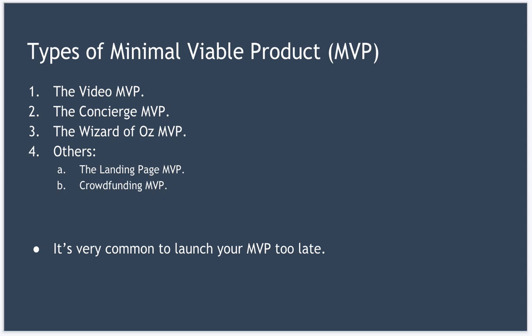Let's take a look at the different types of MVP available. The first is the Video MVP — instead of building a functioning prototype, you simply create a video showing how your product will work, and show that video to potential customers to see if it meets their needs and if they want the product when you build it. It's also a good idea to ask them to pay for it up front, usually enticing them with a substantial discount. The most famous example of a Video MVP is Dropbox. Founder Drew Houston used a four-minute video to explain what is a really complex product. Based on that video, he received positive feedback and funds for development — Drew knew there was demand for his product rather than hoping there was.